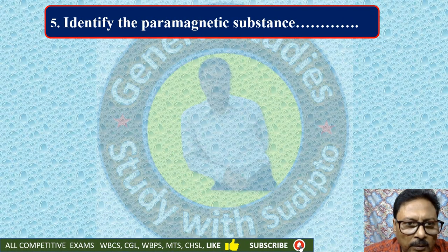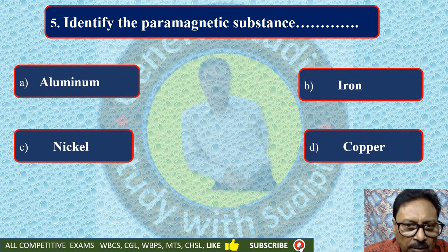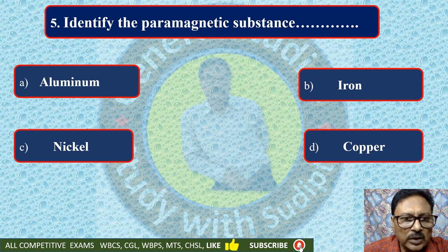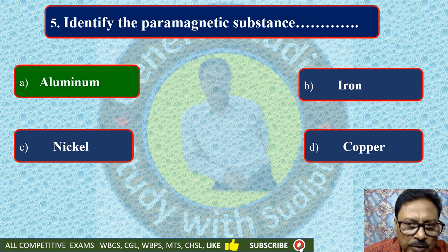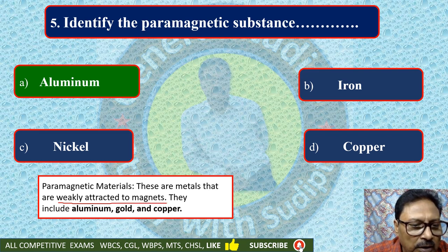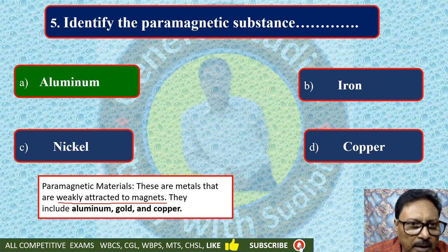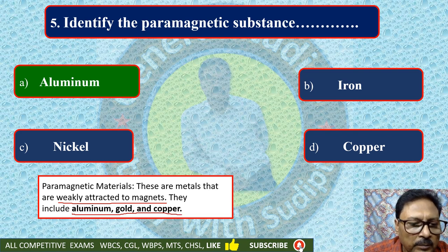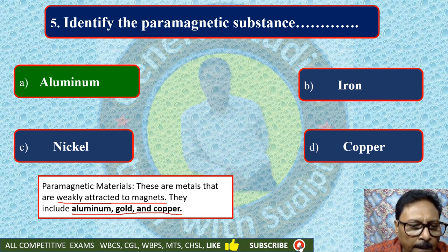Identify the paramagnetic substance: aluminium, iron, nickel, or copper. Aluminium is the paramagnetic substance. Paramagnetic materials are metals that are weakly attracted to magnets. These materials include aluminium, gold and copper. These metals weakly attract to magnets. So here aluminium is the correct option.